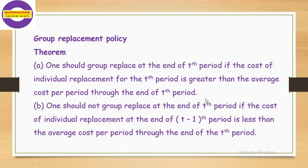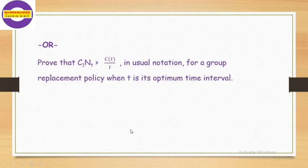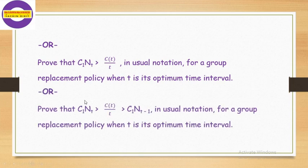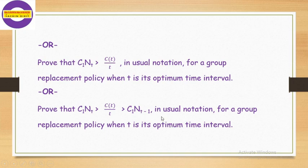This group replacement policy can be mathematically stated as: prove that C1·n(t) > C(t)/t in usual notations for group replacement policy when t is its optimal time interval. This can also be stated as: prove that C1·n(t) > C(t)/t > C1·n(t−1) in usual notations for a group replacement policy when t is the optimum period interval. Now we prove this property — the inequality — for group replacement policy.